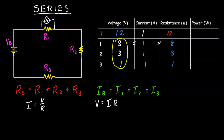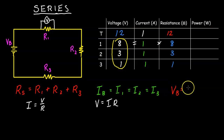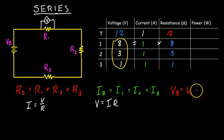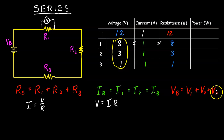That's another characteristic of a series circuit: the voltage across the battery equals the sum of the voltages across the elements in the circuit — V1 plus V2 plus V3 equals the battery voltage.